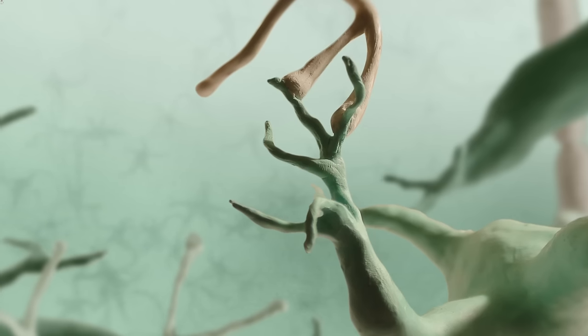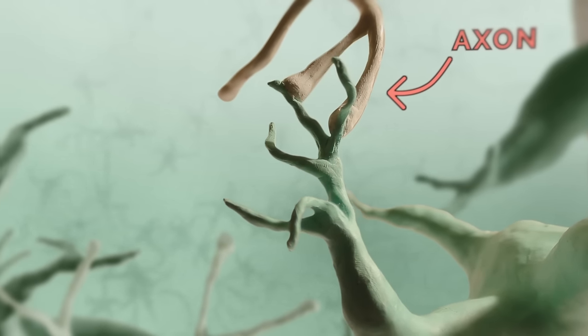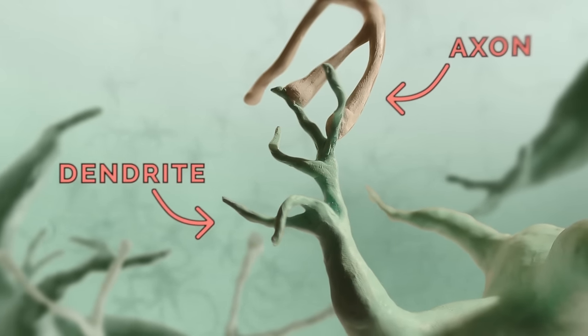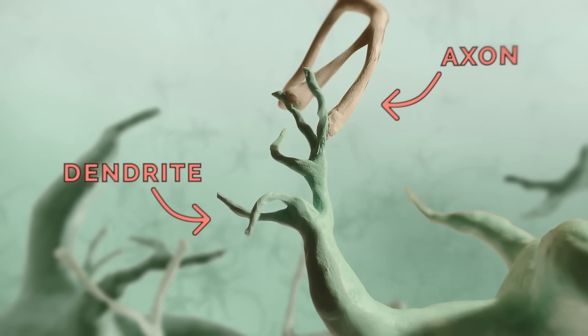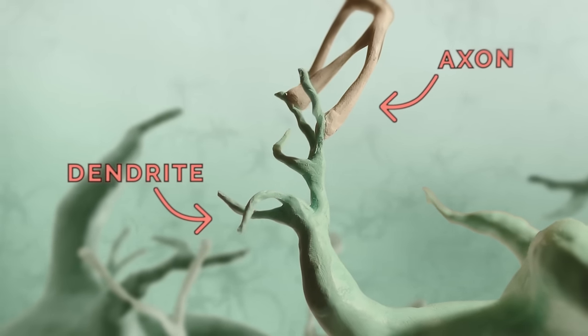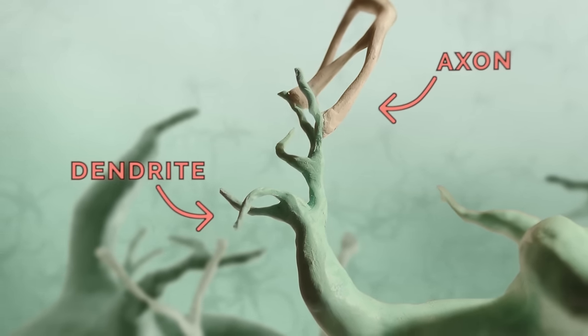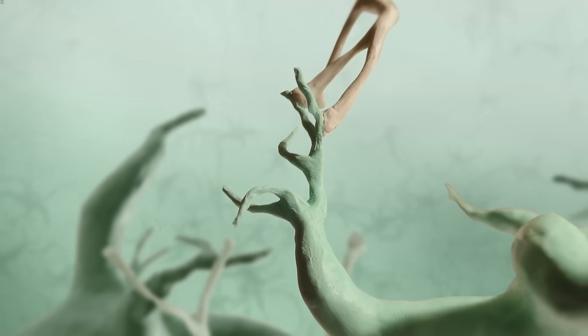The parts of the cells that are specialized for receiving inputs from other cells are called dendrites. The word dendrite comes from the Greek word dendron, meaning tree, and as you can see, the dendrites have a branching, tree-like structure.